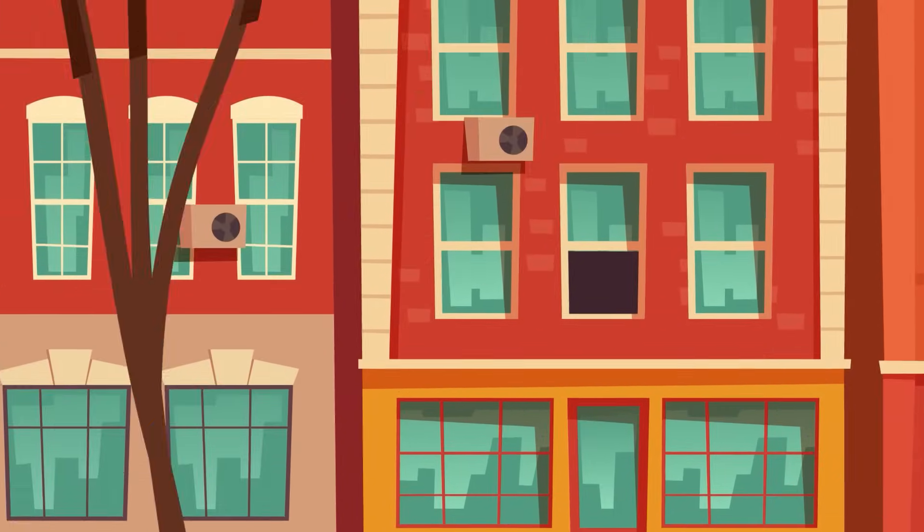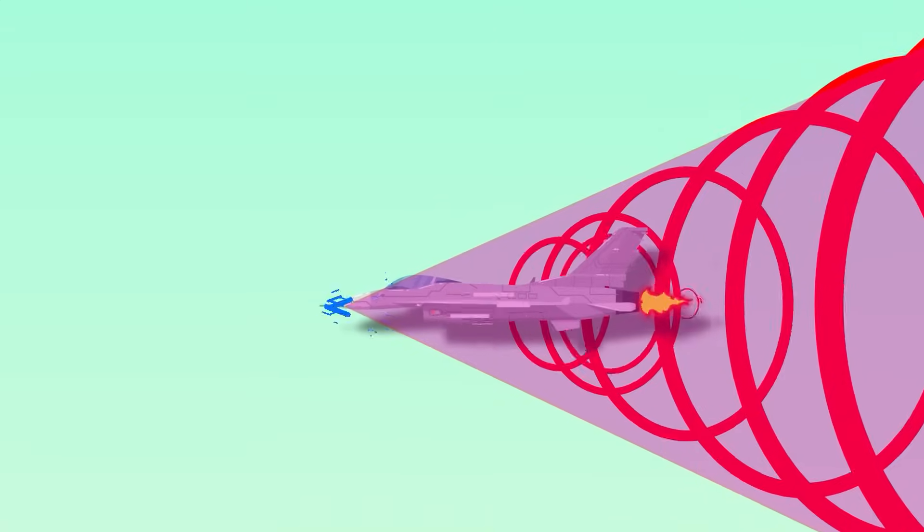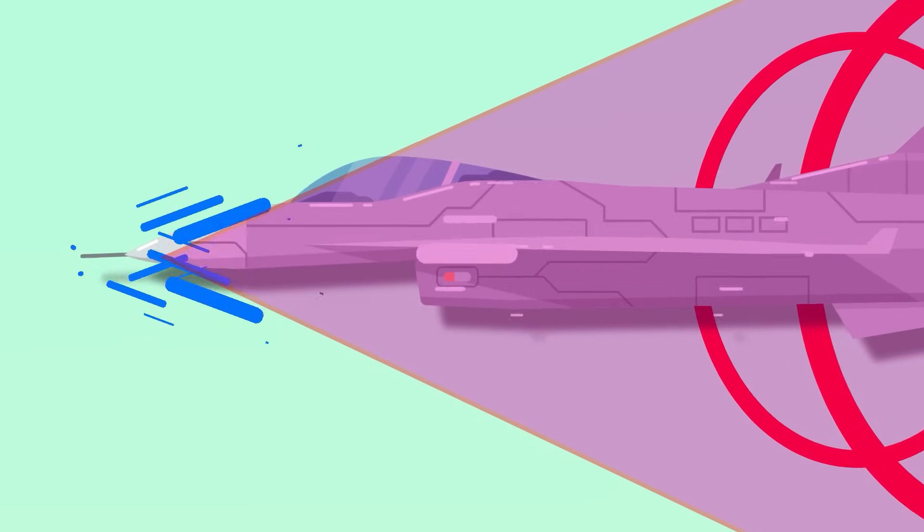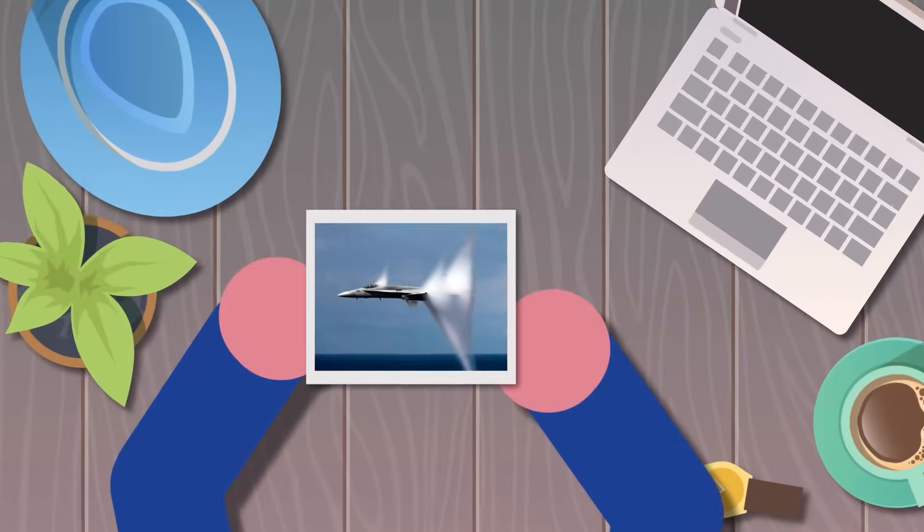Any object traveling faster than the speed of sound actually generates two sonic booms. This is because there are two changes in pressure as an object travels quickly through the air. The first is at the front of the plane, where a huge amount of pressure builds up around the nose. The second is at the tail of the aircraft, where the pressure suddenly returns to normal.